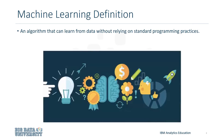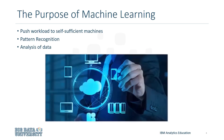Machine learning is an algorithm that can learn from data without being reliant on standard programming practices like object-oriented design. The purpose of machine learning is to make machines more self-sufficient insofar as they're able to analyze data and recognize patterns. One of the benefits of machine learning is that it can be used to automate processes and make them more efficient.